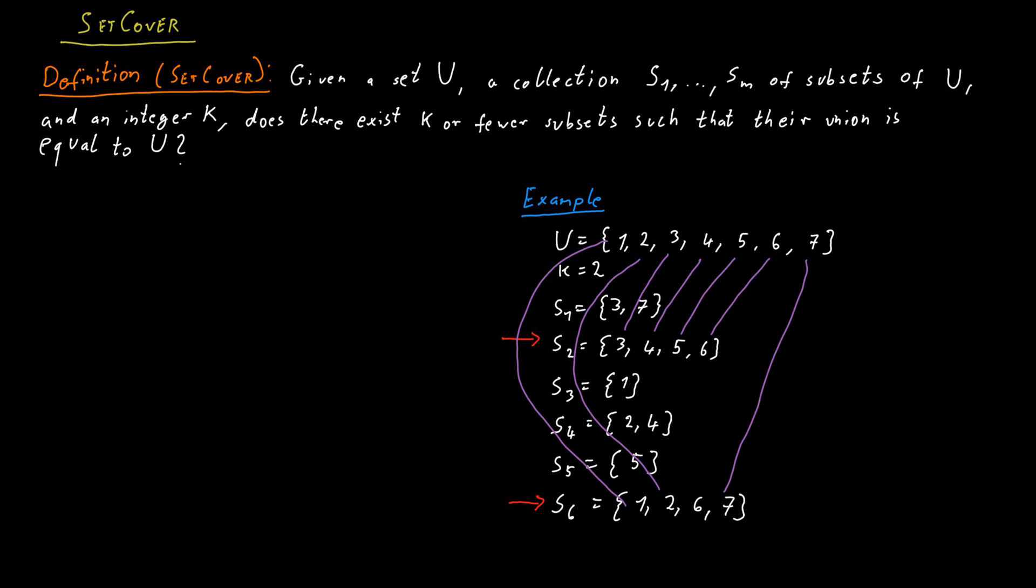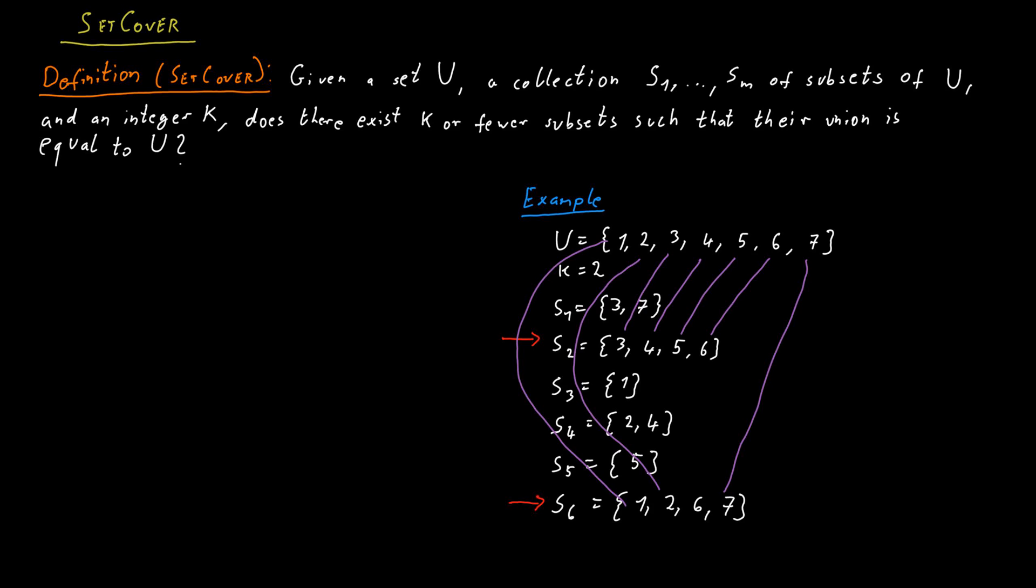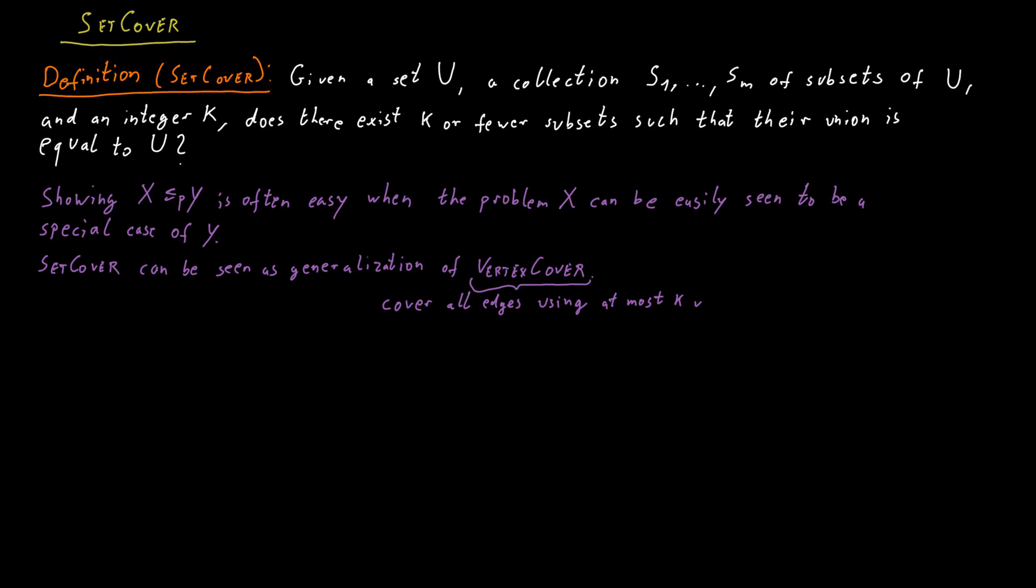Sometimes a reduction can be quite simple. If we want to reduce a problem X to a problem Y, where X is a special case of the problem Y, then a reduction might be quite straightforward. Set Cover can be seen as a more general version of Vertex Cover. And therefore, it's not too difficult to see that Vertex Cover polynomial time reduces to Set Cover.